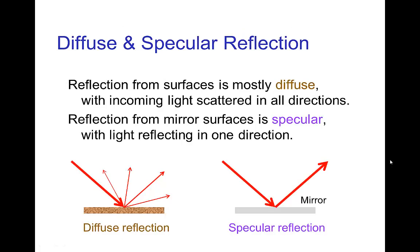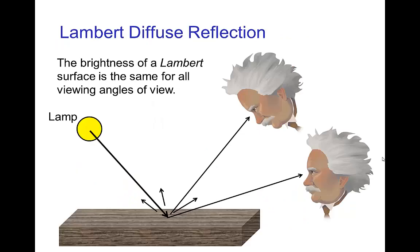There are two basic types of reflection from a surface. The simplest is diffuse reflection — in that case the light that strikes a surface is scattered in all different directions. The other type is specular reflection, which is the kind of reflection you have from a mirror, where the incoming light is reflected in a single direction as opposed to all different directions as in diffuse reflection.